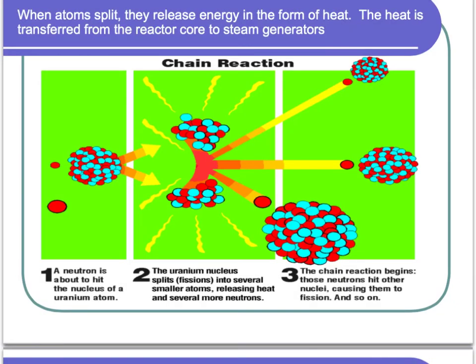In fission, uranium atoms are splitting and as they split they're releasing a whole lot of energy in the form of heat. That heat is transferred from the reactor core to steam generators. Those steam generators power a turbine — kind of like a big fan — and that's what creates the electricity that we can use.